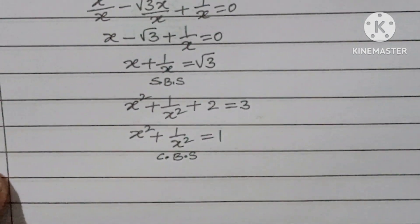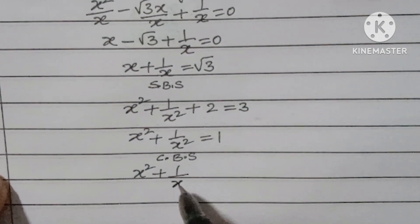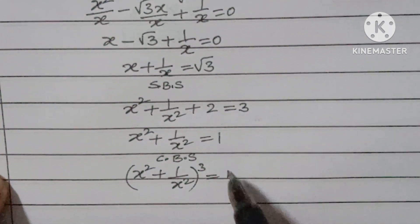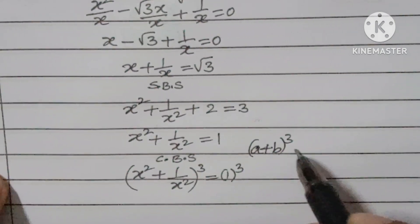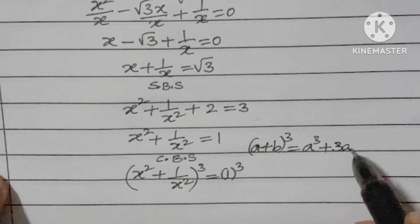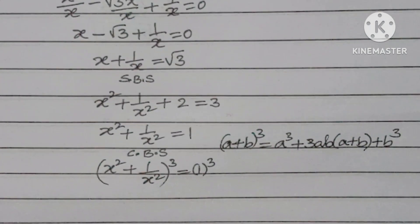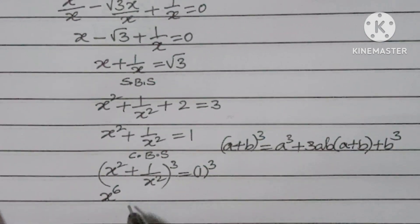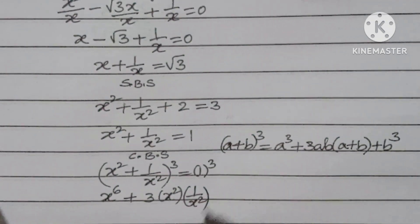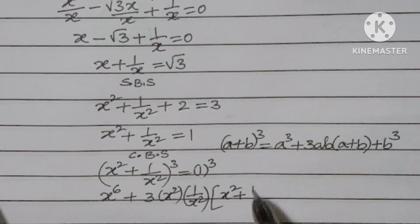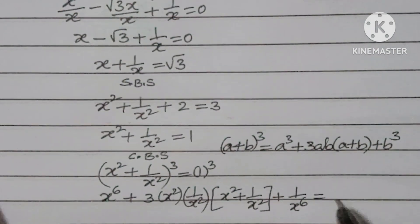Now apply the formula (a + b)³ = a³ + b³ + 3ab(a + b). Using this on x² + 1/x² = 1, cube both sides. We get (x²)³ + 3·x²·(1/x²)·(x² + 1/x²) + (1/x²)³ = 1³, which gives x⁶ + 3·(x² + 1/x²) + 1/x⁶ = 1.